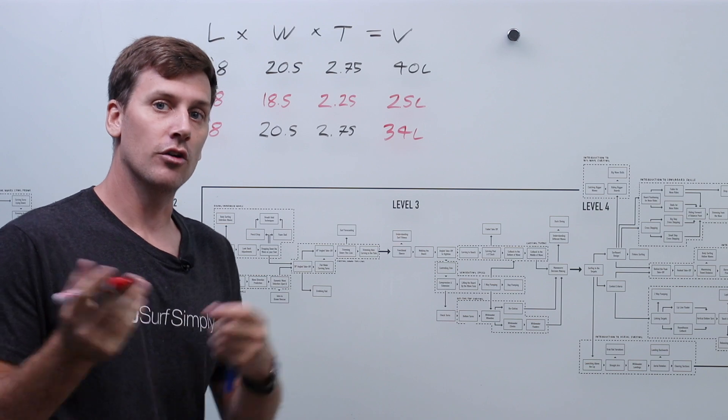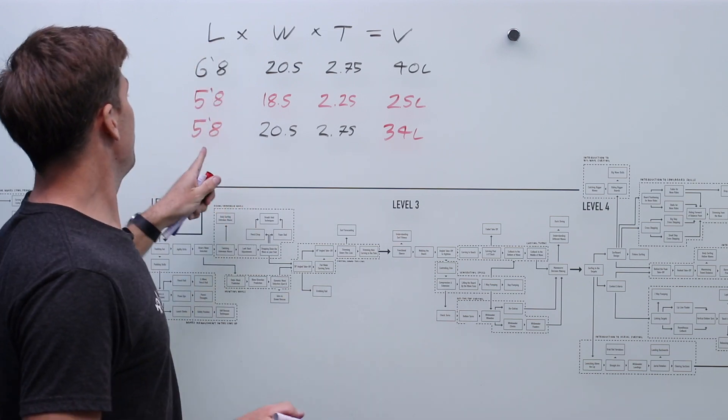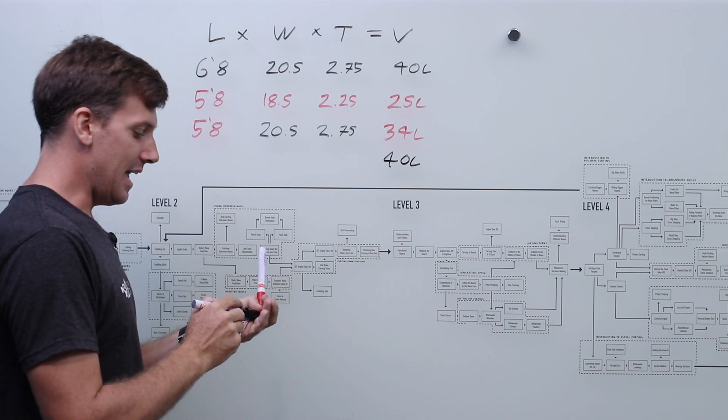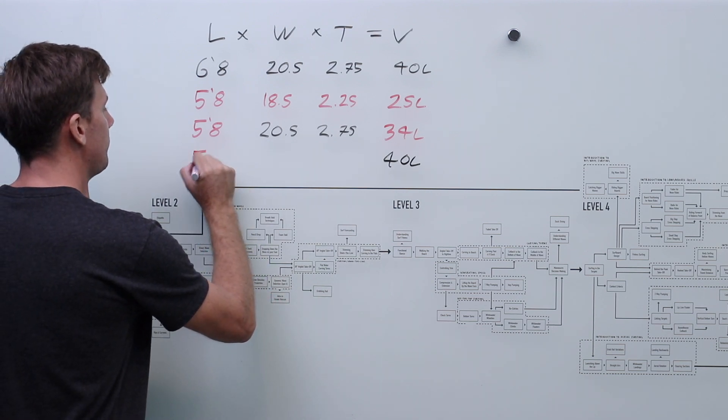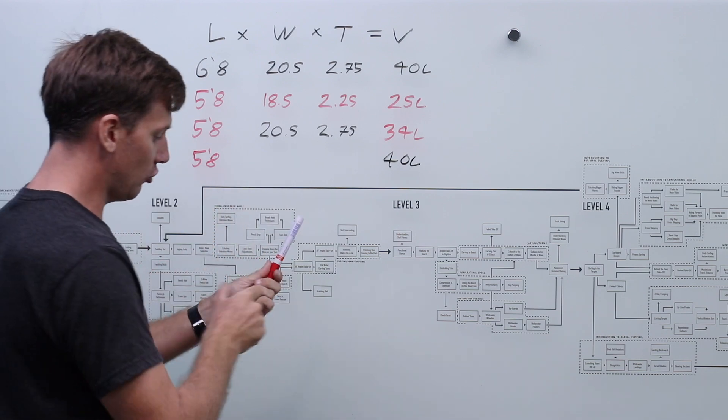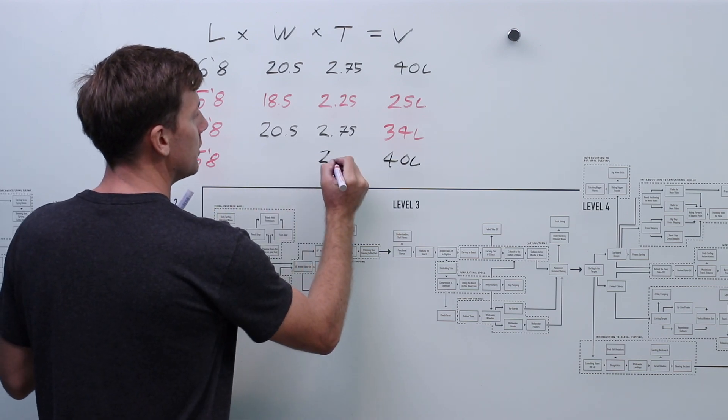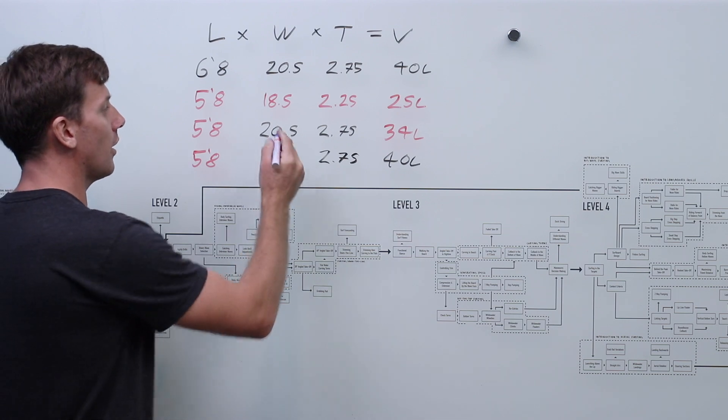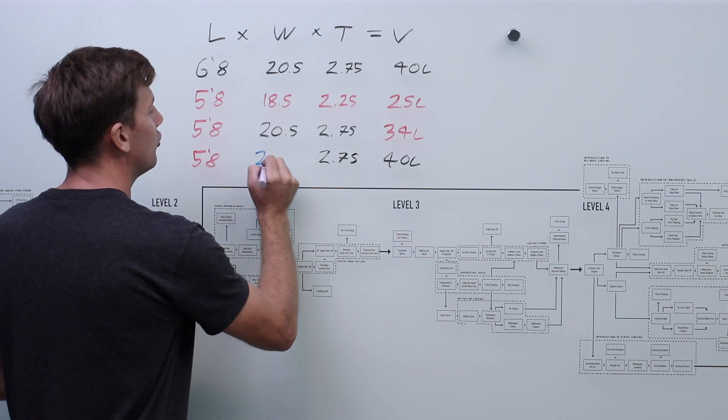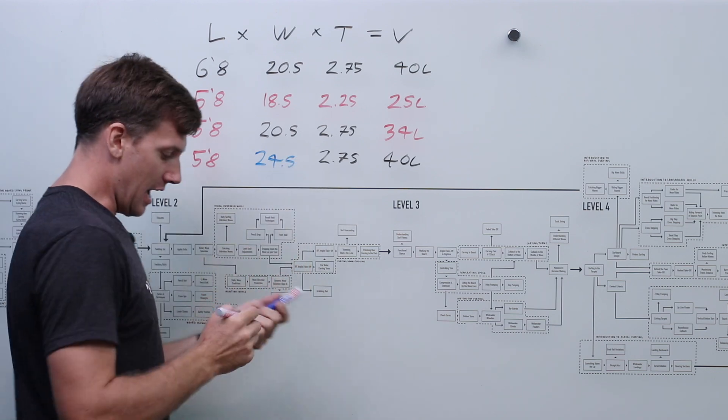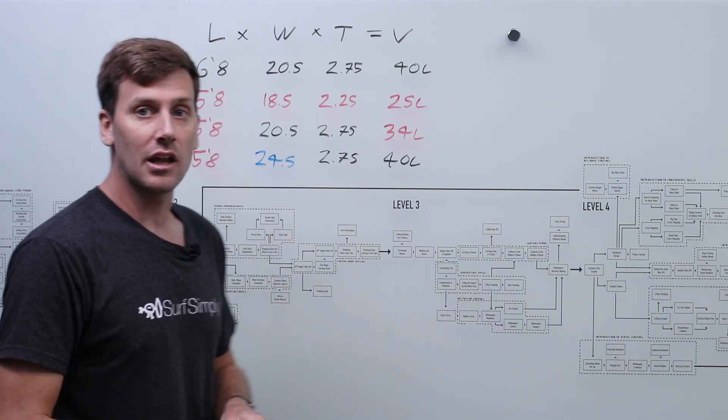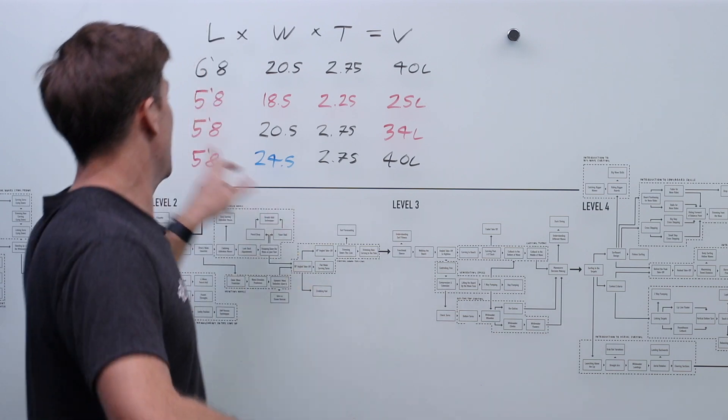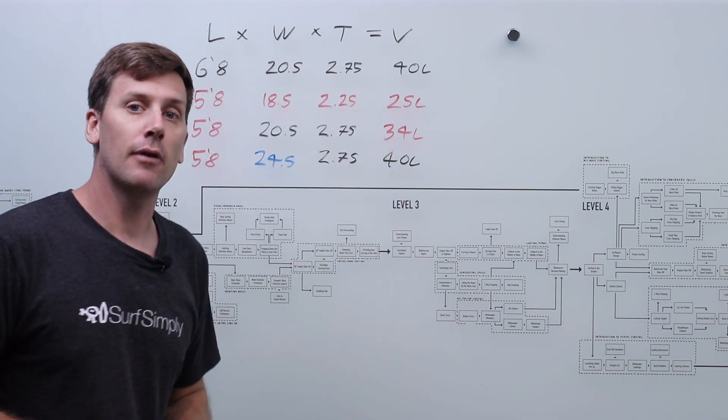I tried playing around with this on some shaping software. Now if we were to try to retain the 40 litre volume in a 5'8" without adjusting everything too much so we'll keep the 2.75 thickness we would have to take the width all the way up to 24.5 and by this point this surfboard is starting to look like a sort of comedy cartoon character that's blown itself up into a big balloon. It's completely different shape and outline.